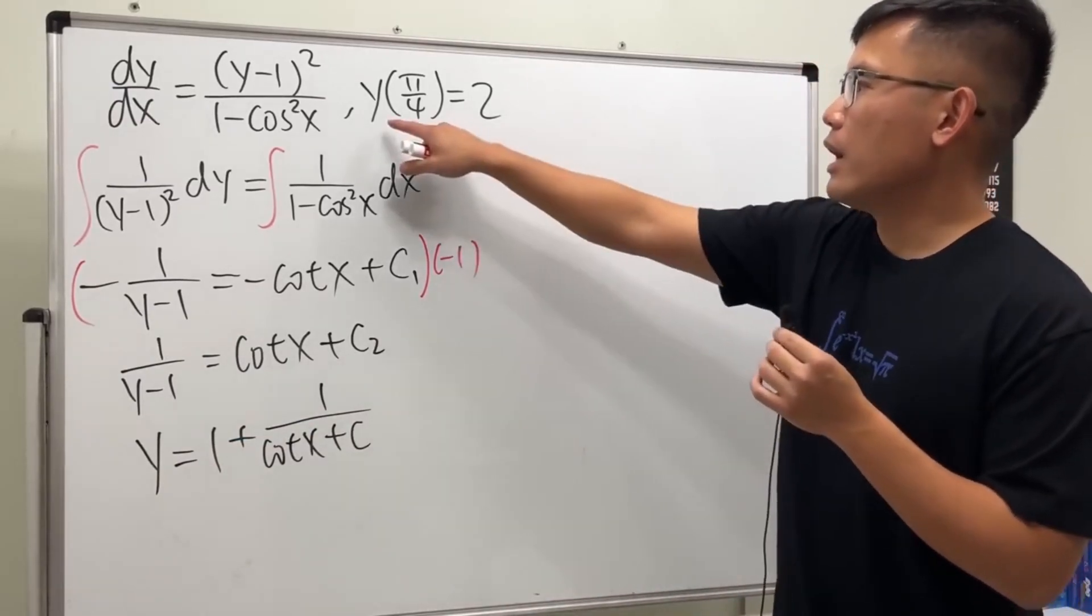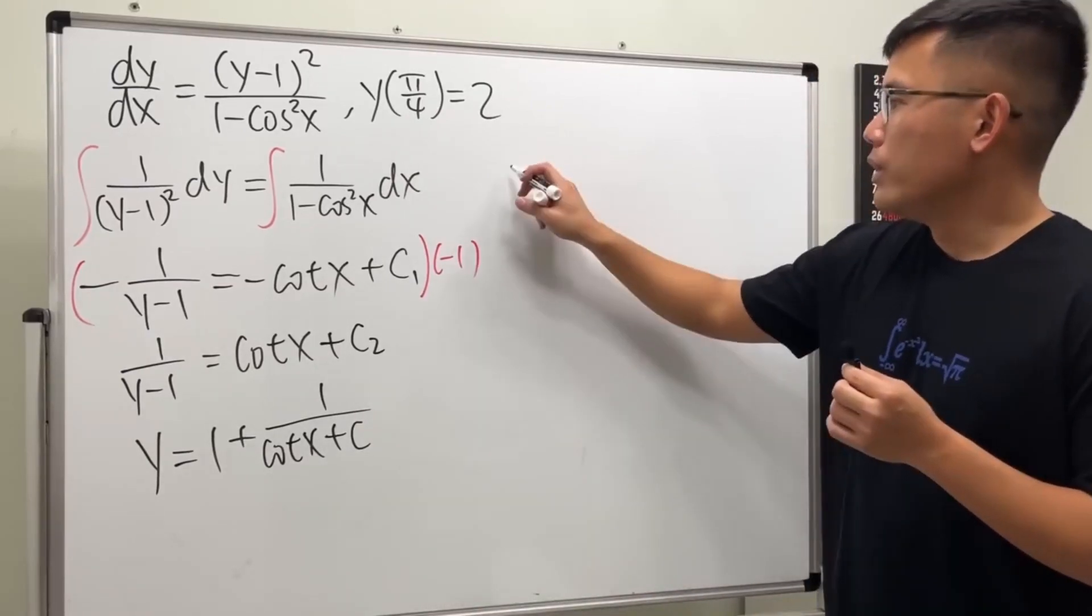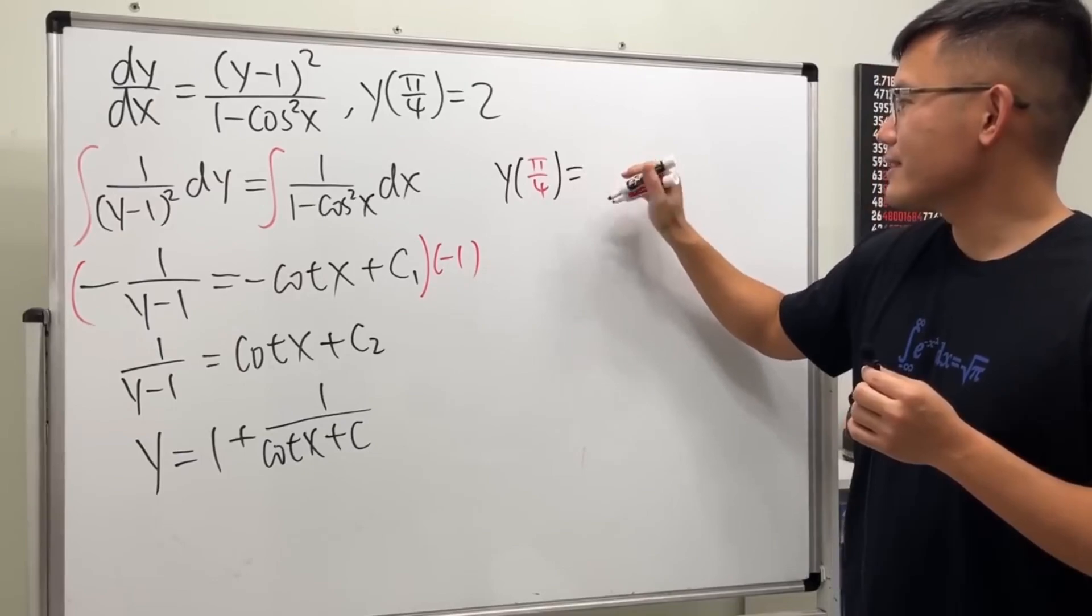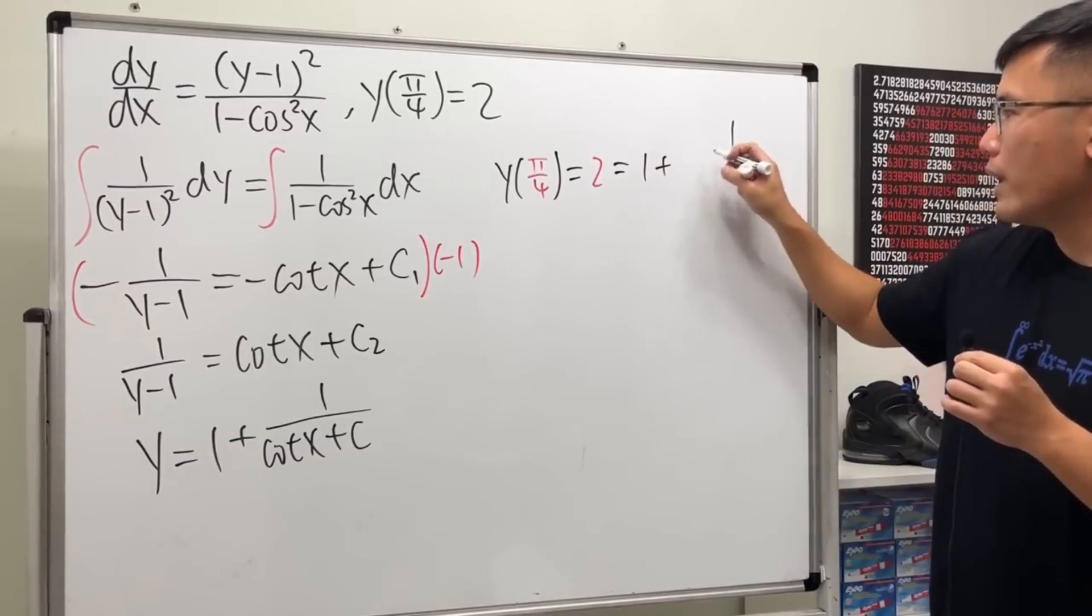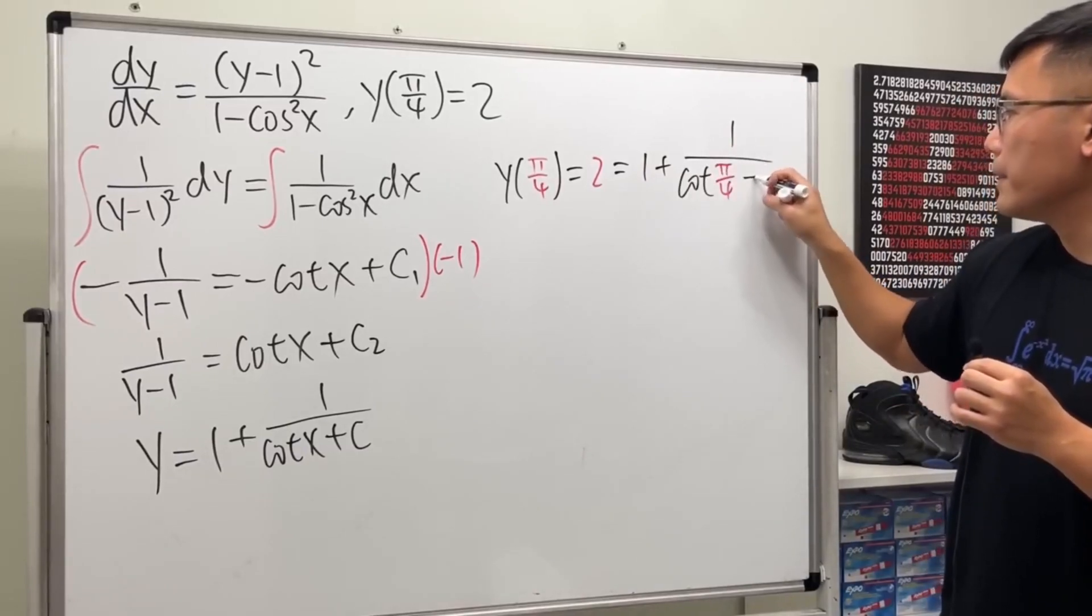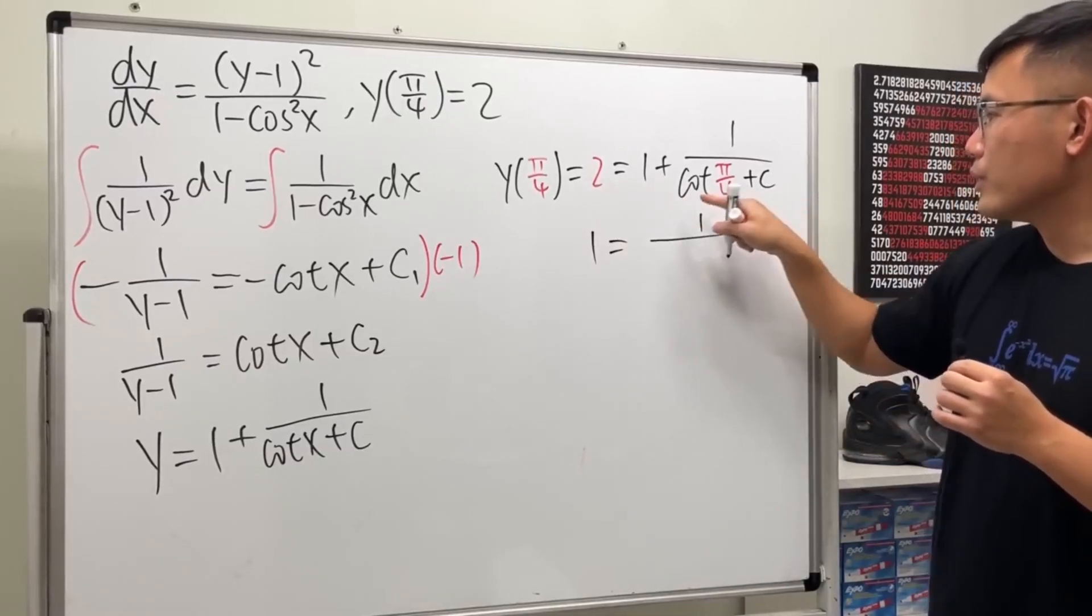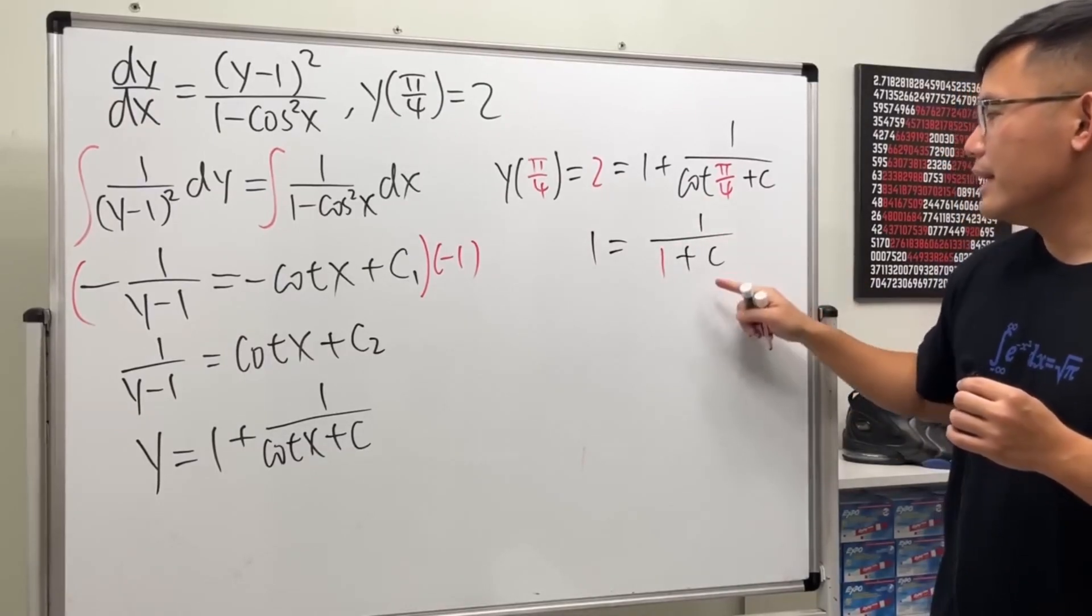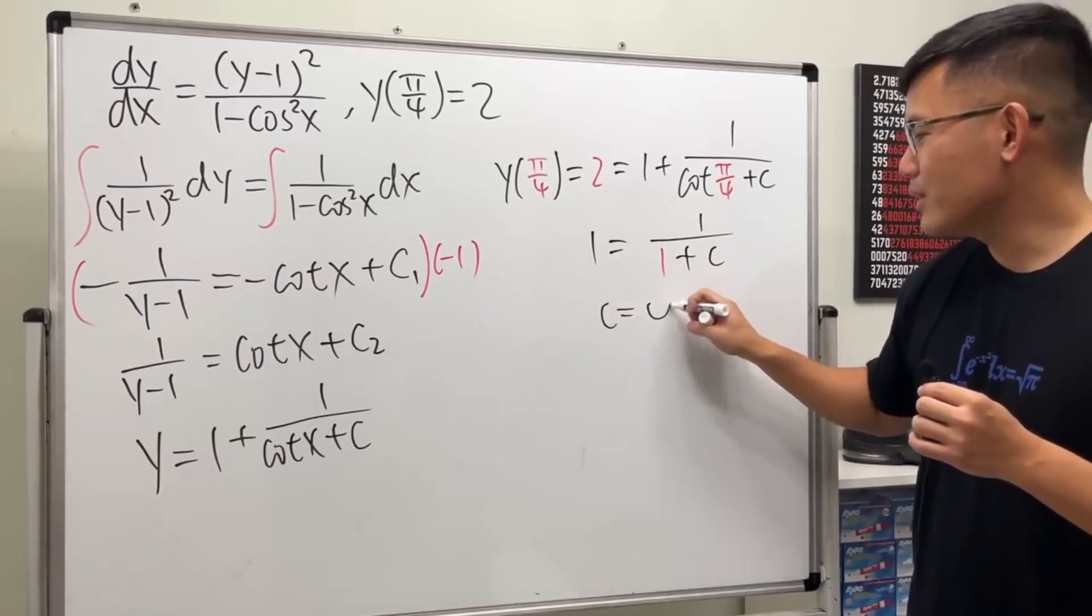Now to use this initial condition, we can solve for C. We know y(π/4) = 2. This means put π/4 into x, so we get 1 + 1/(cot(π/4) + C) = 2. Subtract 1 from both sides, and cot(π/4) = 1, so we have 1/(1 + C) = 1. The only way for this to be 1 is when C = 0, so C = 0.